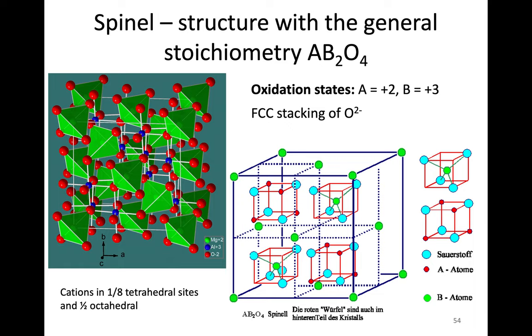The general stoichiometry of a spinel is AB2O4. They're typically oxides and we have two cations. The B site cations have twice as many as the A site, and then we have four oxygens. The typical oxidation states to obtain this, because oxygen is always 2-, which gives us 8-, so we have to balance that.